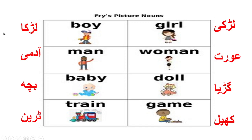Some examples of common nouns with pictures: boy, man, baby, train, girl, woman. These are all common nouns.